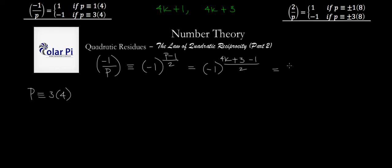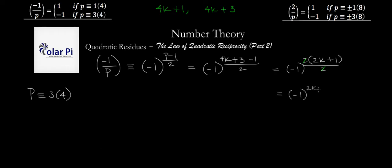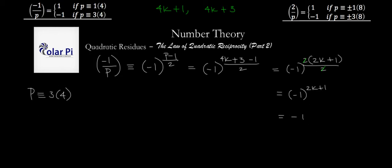Because if P is congruent to 3 mod 4 instead, then (-1)^((P-1)/2) reads (-1)^((4k+3-1)/2), which is (-1)^((4k+2)/2). We can write 4k+2 as 2(2k+1), and dividing by 2 gives (-1)^(2k+1). Since 2k+1 is always odd, we have negative 1 to an odd power, which is negative 1. Therefore, (-1/P) equals negative 1 when P is congruent to 3 mod 4.